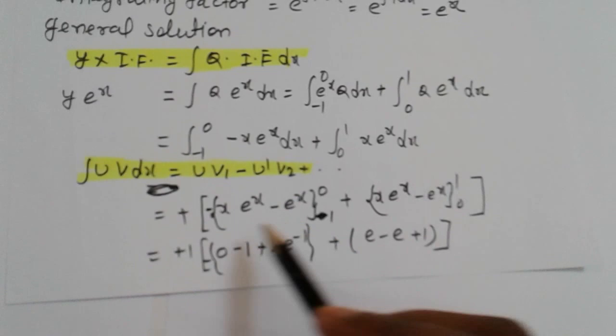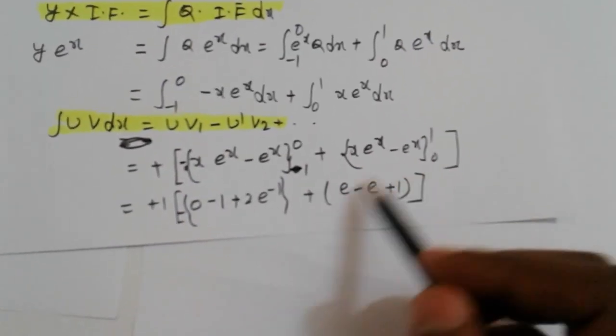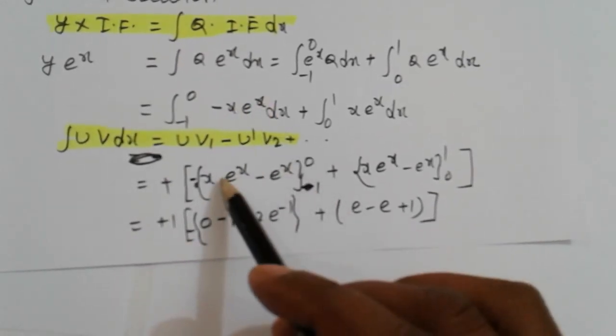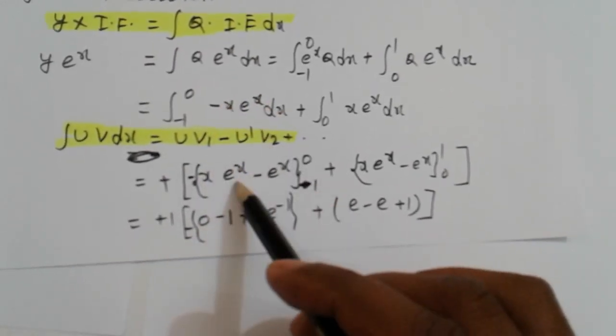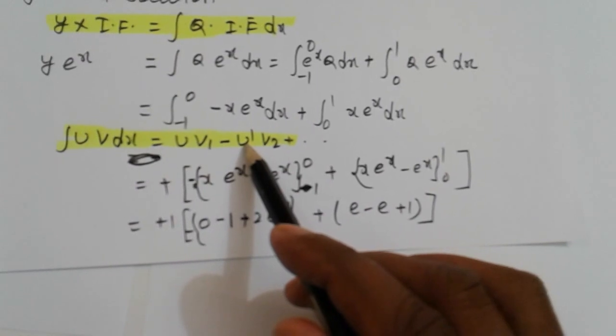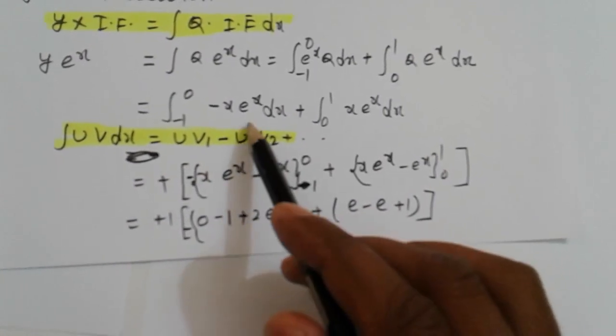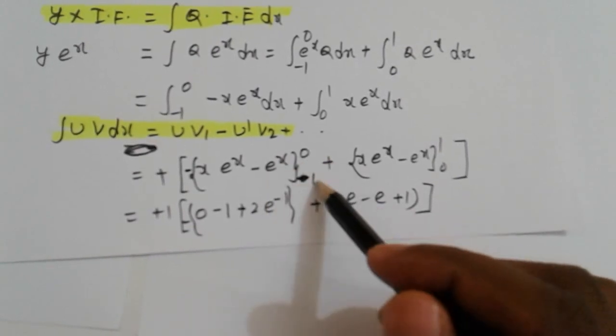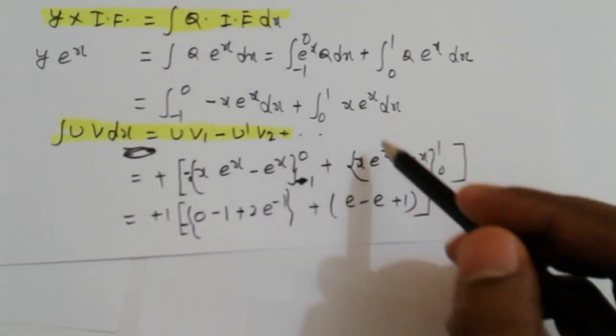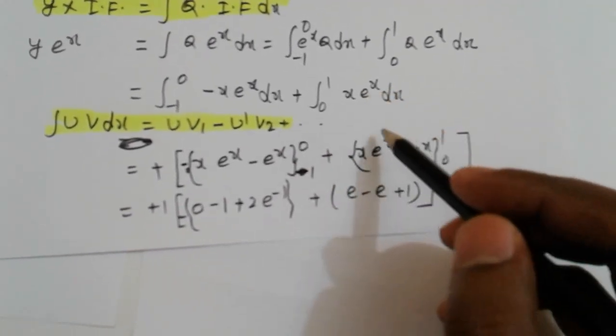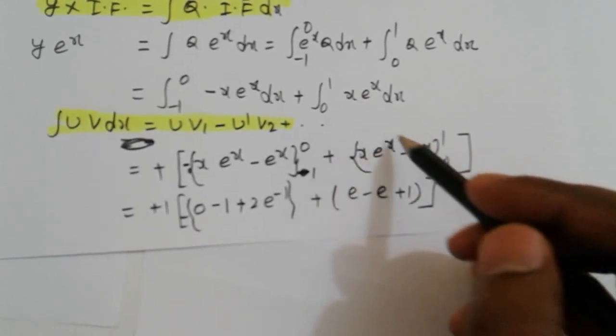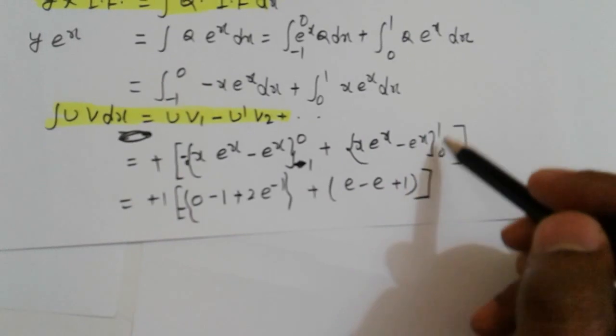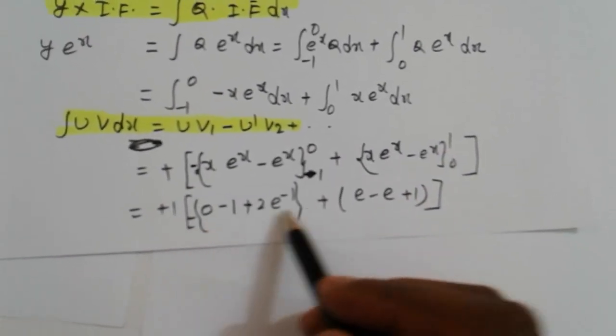First apply and put limit: first integrate, first function into derivative of second, then second integration and derivative of first, apply limit minus 1 to 0. Similarly here, first integration of e raised to x, derivative u dash is 1, again e raised to x, 0 to 1.